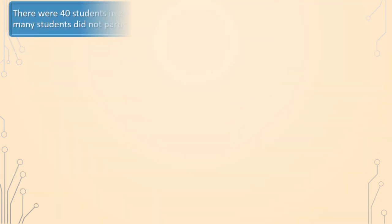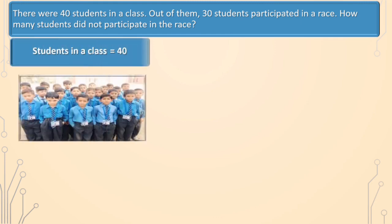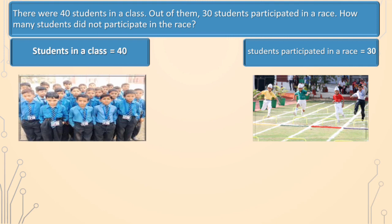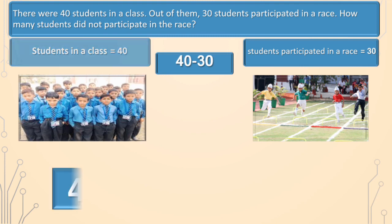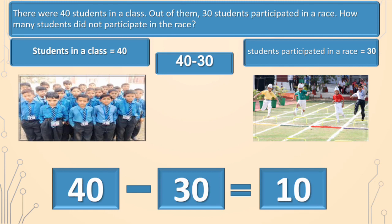There were 40 students in a class. Out of them, 30 students participated in a race. How many students did not participate in the race? Students in a class is equal to 40. Students participated in a race is equal to 30. We will find the number of students who did not participate — here we will subtract. 40 minus 30 is equal to 10. So, 10 students did not participate in the race.